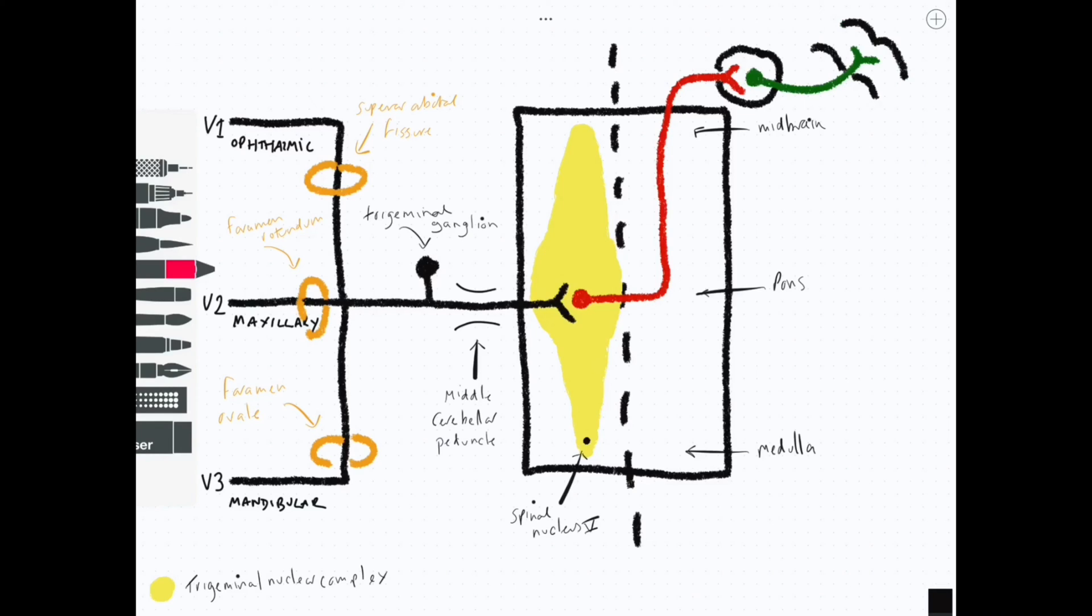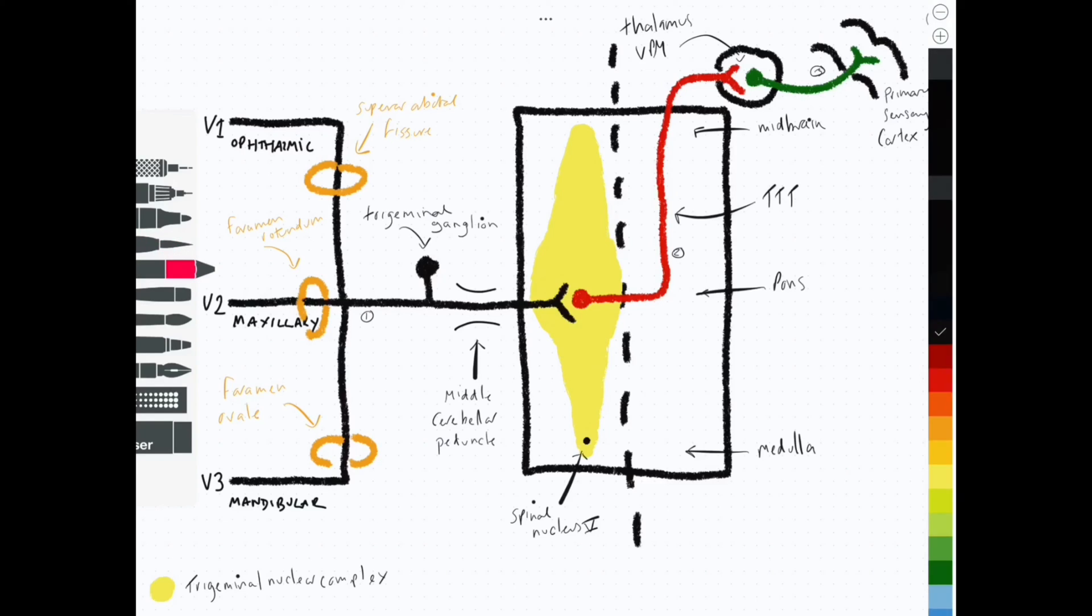It synapses up in the thalamus, and then the green neuron travels as the third-order neuron onto the somatosensory cortex. The ventral posterior medial nucleus is where the synapse takes place between the second and third-order neuron. That's because we are dealing with sensations from the head.